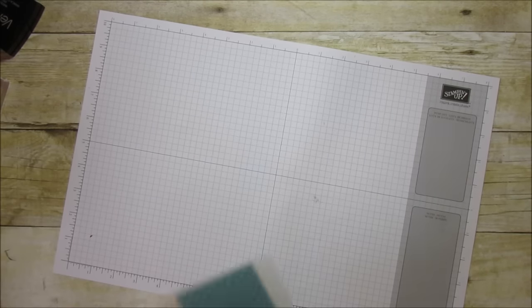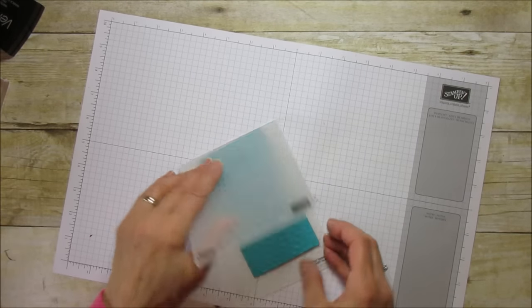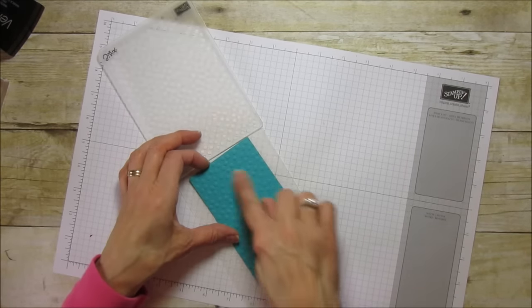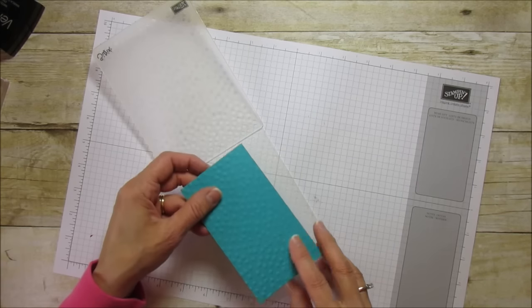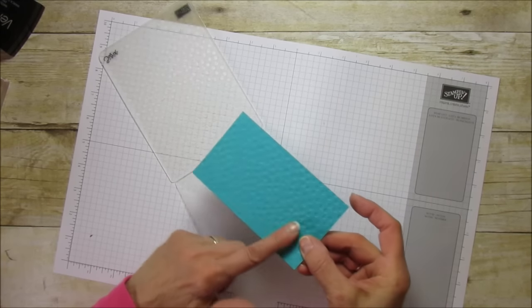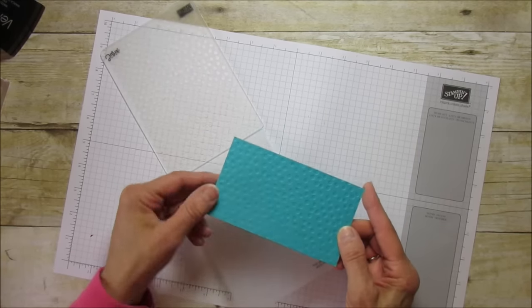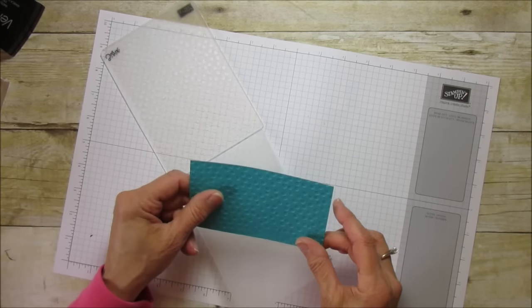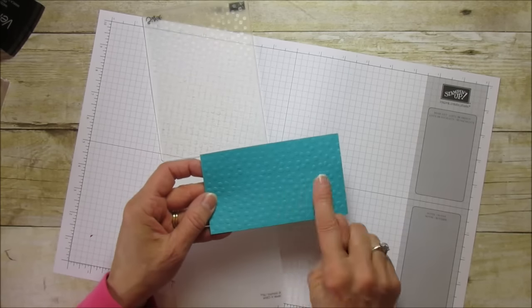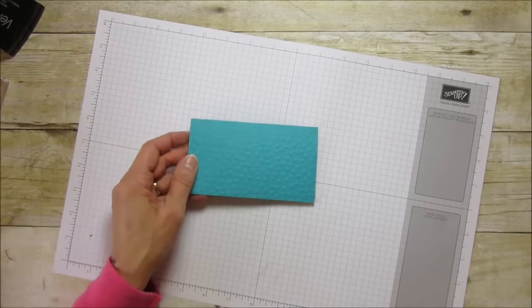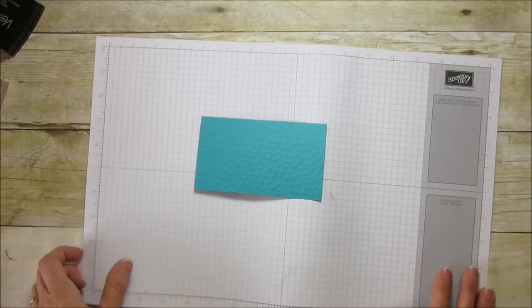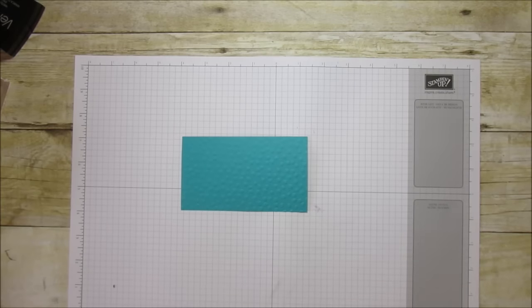The little bumps are all on the outside now. If you like it the other way you can turn it around and it's like a debossed side, so you can use either way. I like it with the bumps out so that's how we're going to use this piece.